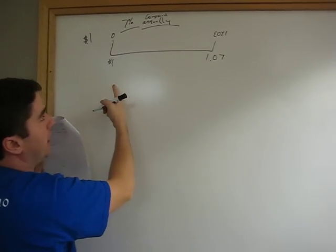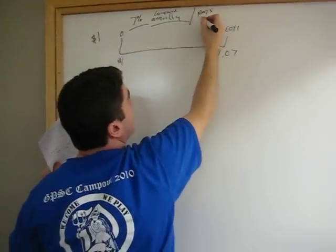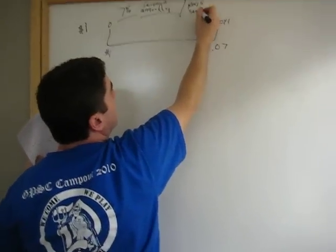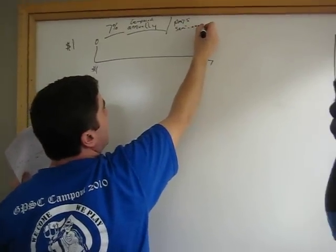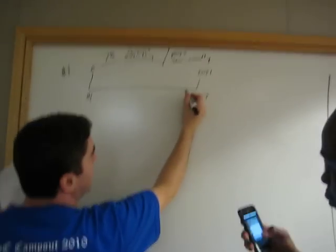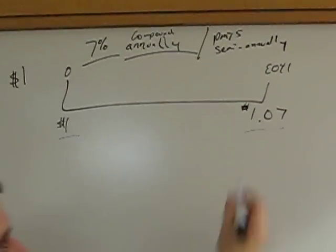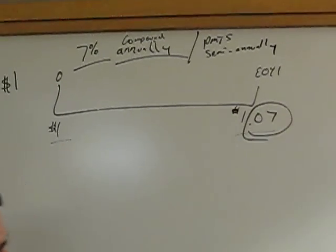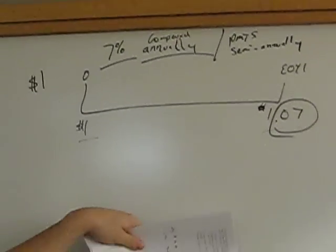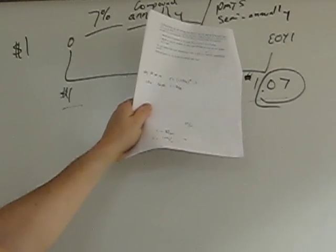Now let's say I compound annually, but I have payments semi-annual. Payments that you're receiving? Because remember what I'm actually getting here at the end of the day? I'm starting with a dollar, and I end up with 1.07. So really, this is my payment, and I get it all at the end of the year. So if I compound annually, but I get payments semi-annually,